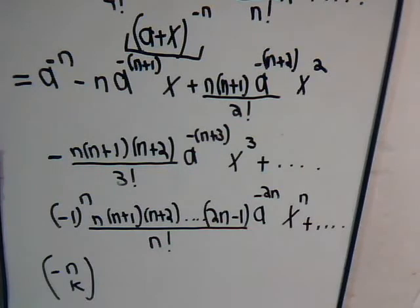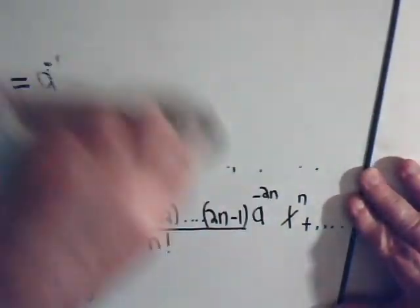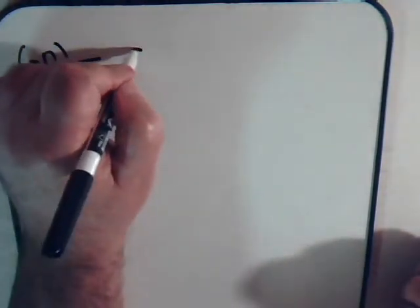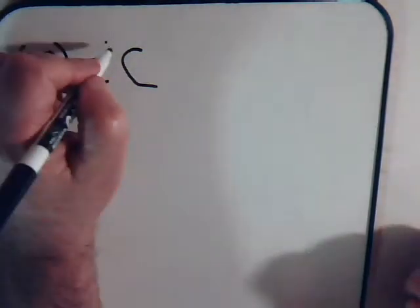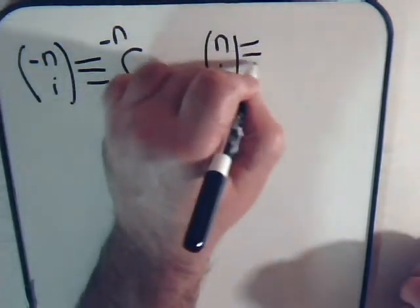We're going to need a little more room, so let's look at this type of binomial coefficient. Instead of n-choose-k, we'll have minus n-choose-i. In our previous videos, we were writing the binomial coefficient like this — either notation means the same thing. Let's use our definition of binomial coefficients and see what that equals.